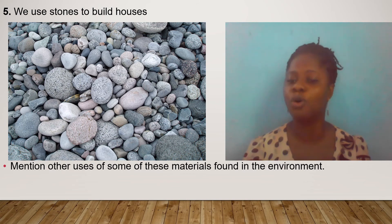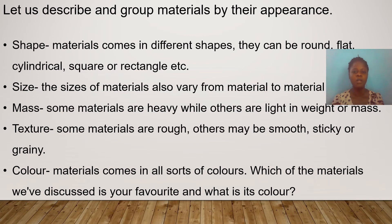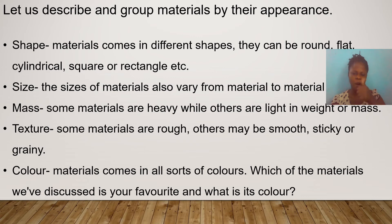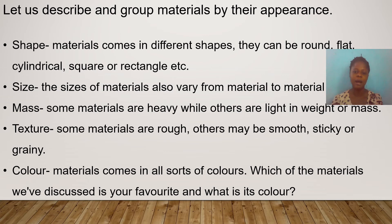In describing materials by their appearance, we have shape. Materials come in different shapes — they can be round, flat, cylindrical, square, or rectangular. If you look at the plastics, you could see that some were long, while others were shaped like a box or square. So you can see that materials do come in different shapes.